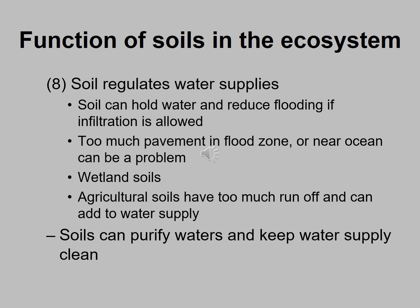Soils regulate water supplies. Good, healthy, rich soil with lots of organic matter can hold water and reduce flooding — it stops the water, holds on to it, and allows infiltration. If soil doesn't have good structure, lacks organic matter, or is compacted, water will just hit it and run off rather than infiltrate. Wetland soils, as with my Mission Creek example, hold on to water and let it infiltrate, and soils can purify waters and keep the water supply clean.